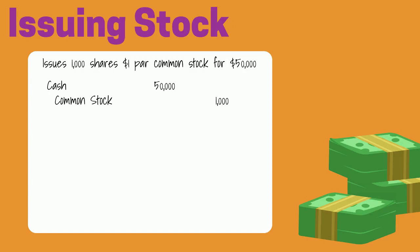The difference is the amount over par that the company received for the stock. Again, par has nothing to do with the stock's value. The amount paid over par is recorded in an account called paid-in capital in excess of par. It's a long name, but it says exactly what it is — it is the amount someone invested in the company above the par amount. The company would credit paid-in capital in excess of par for $49,000.